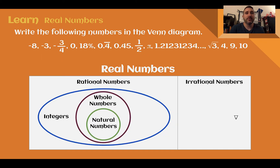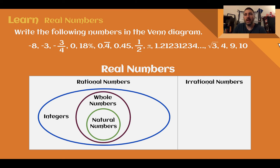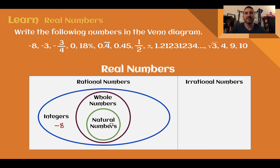Let's sort these numbers by writing them in the Venn diagram. We're going to sort them into rational or irrational, and then integers, whole numbers, and natural numbers if rational. Pause the video now if you want to do this before me. Negative 8 is a rational number, and because it's a negative counting number, it goes in with the integers. Whole numbers are zero and your positive counting numbers. Natural numbers are just your positive counting numbers, not zero.